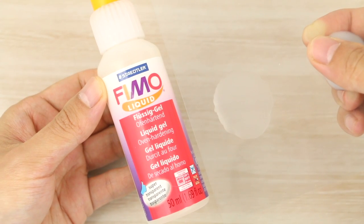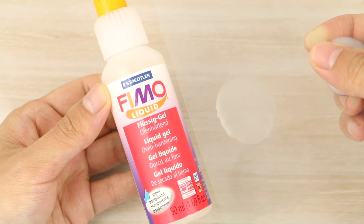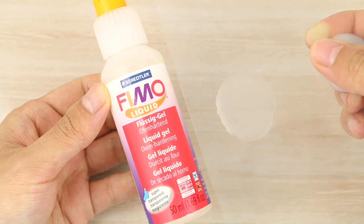The Fimo Deco Gel is super translucent and it's great for making sauces that are really clear like fruit based ones.